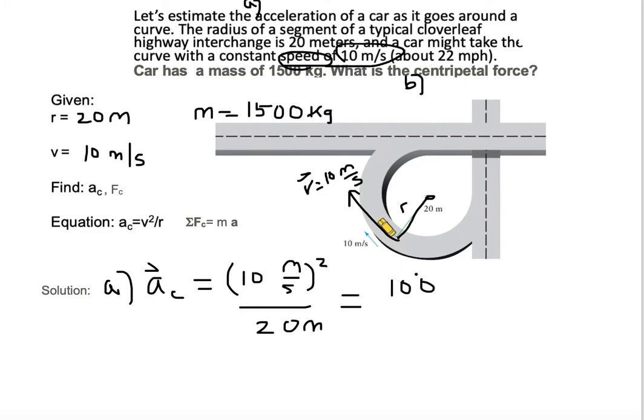So we get our value of 100. But then you also need to square the m and the s. So m gets squared, so it's meters squared, divided by seconds squared.